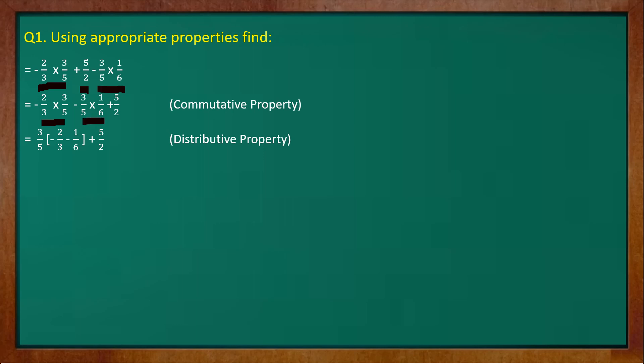We have taken out the common, this is distributive property. Now what we have to do is we have to solve this bracket part by taking the LCM because this is subtraction. We have to take LCM like we are doing it in fractions. So we first will write 3 upon 5 and the LCM between this bracket of 3 and 6 would be 6. 3 upon 5 in bracket we will take the LCM to be 6 and then that 6 will be divided with 3 that is 2 and 2 multiplied with the numerator that will give you minus 4.